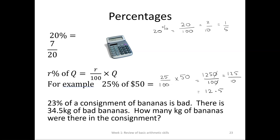This one's a little bit different. It says 23% of a consignment is bad — there are 34.5 kg of bad bananas. How many kg were in the consignment in the first place? We have to go the other way: to find 100%, we'd say 34.5 over 23 times 100, which comes out to be 150 kilos. These notes will be on your Podia for your class, so you can follow along there. Thanks for watching.